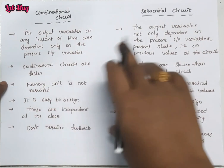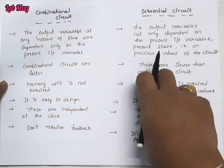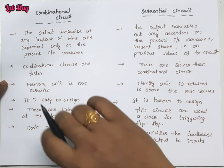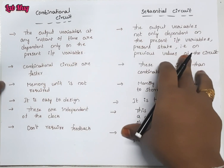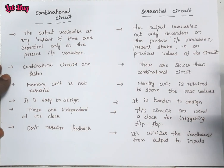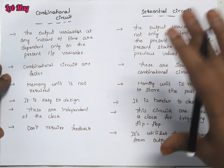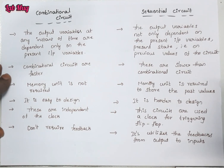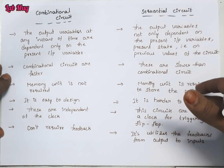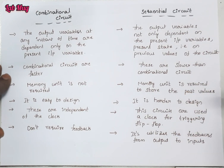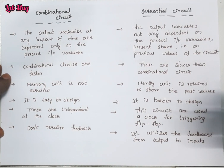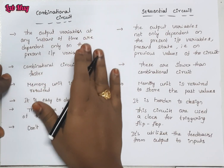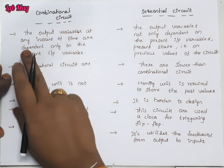In the previous class, we covered what is a combinational circuit and what is a sequential circuit as individual concepts. Now let's look at the differences between combinational circuits and sequential circuits. Both are important main components in digital electronics, so before going to the topic, let's subscribe and then discuss the differences.